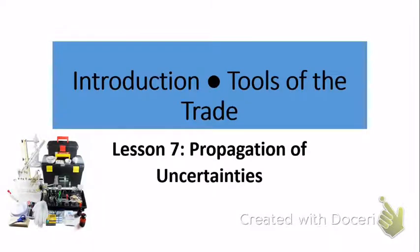Let's get started with Lesson 7: Propagation of Uncertainties. Now that we've addressed what random error is and how to express it as plus or minus values, we can now get into how to express random error when we multiply, add, subtract, or divide measurements in the chemical laboratory.